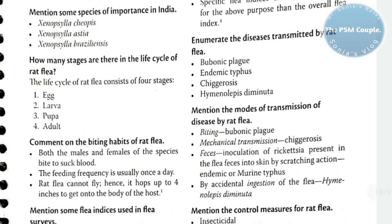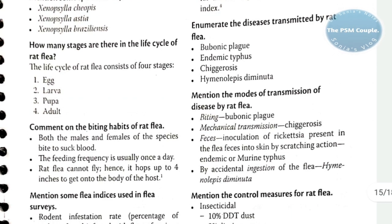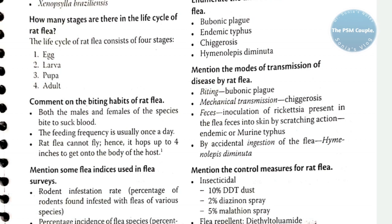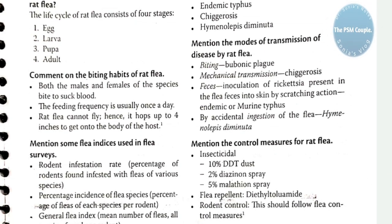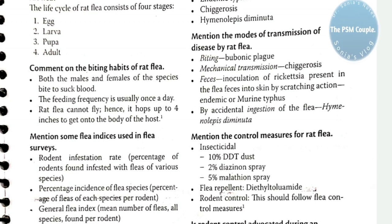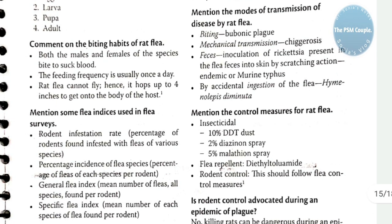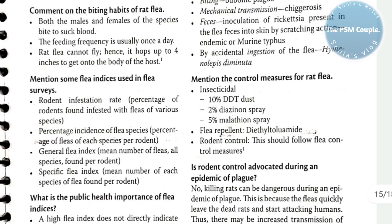Diseases transmitted by the rat flea include bubonic plague, endemic typhus, shigellosis, and Hymenolepis diminuta. Modes of transmission: by biting — bubonic plague; mechanical transmission — shigellosis; inoculation of rickettsiae present in flea feces into the skin by scratching; and by accidental ingestion of flea — Hymenolepis diminuta.